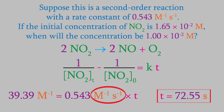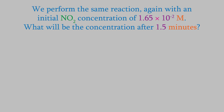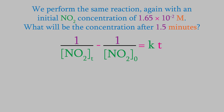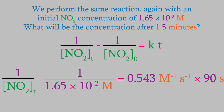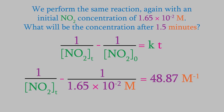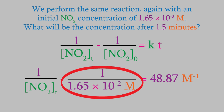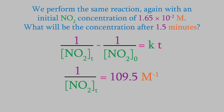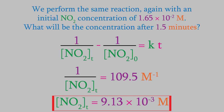Let's try another problem. Suppose we perform the same reaction, still starting with a concentration of 1.65 times 10 to the minus two molar. What will be the concentration after the reaction has been going for 1.5 minutes? We use the same equation, but this time our unknown is the final concentration A-t. We plug in all the other data — don't forget to convert 1.5 minutes into seconds since the rate constant uses seconds. Solving the right side gives 48.87 M⁻¹. Adding that fraction to both sides gives 109.5 M⁻¹ on the right. Solving for A-t gives 9.13 times 10 to the minus three molar.